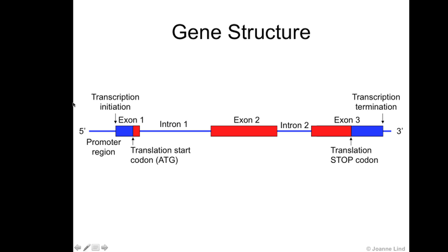The transcription initiation site, or the start point of transcription, is at the very start of exon 1. The very first section of exon 1 will therefore not be translated, because you will always need a section of the gene to allow for the translation machinery to bind, to then translate that transcript into protein.